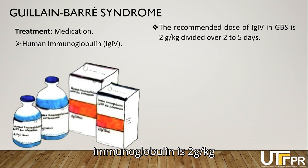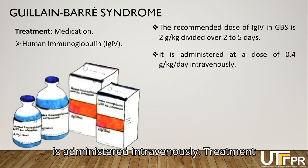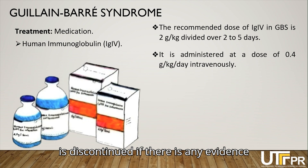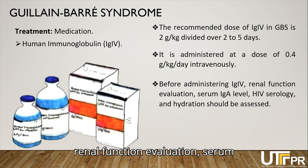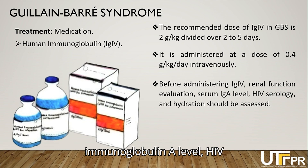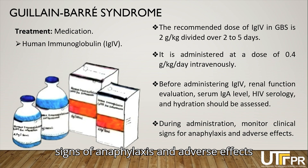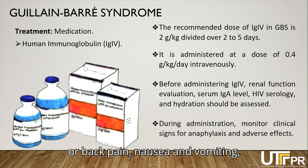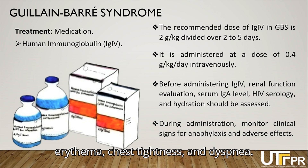The recommended dose of immunoglobulin is 2 g/kg divided over two to five days, with 0.4 g/kg/day administered intravenously. A higher daily dose may increase the risk of renal or vascular complications, especially in elderly patients. Treatment is discontinued if there is evidence of renal function loss or anaphylaxis. Before administering immunoglobulin, renal function evaluation, serum immunoglobulin A level, HIV serology, and hydration should be assessed. During administration, clinical signs of anaphylaxis and adverse effects should be monitored, such as chest, hip, or back pain, nausea and vomiting, chills, fever, malaise, fatigue, weakness, dizziness, headache, urticaria, erythema, chest tightness, and dyspnea.